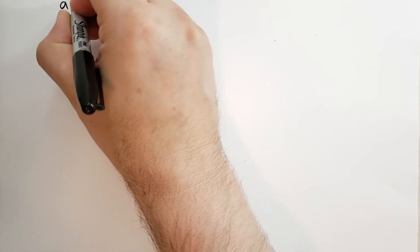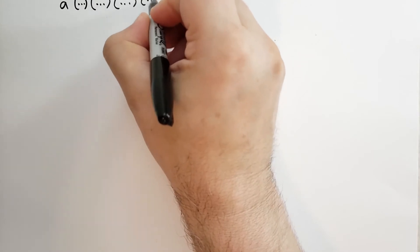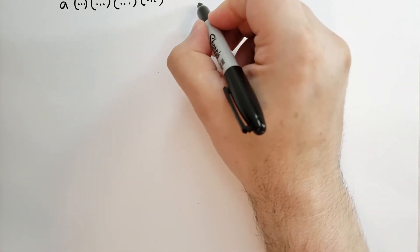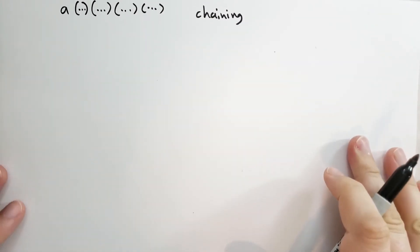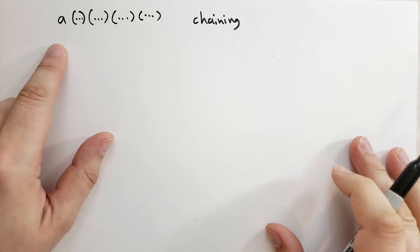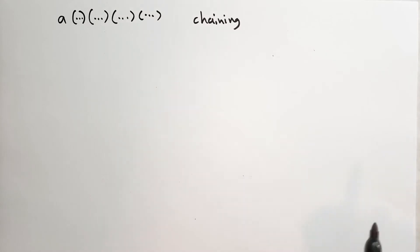What about a special case? Let's say you had a function where you call the function and it returns a value that is a function. And you want to call that function and then you want to call that function and you want to call that function. We call this function chaining. So named because you're chaining the functions together into a long continuous series of calls.